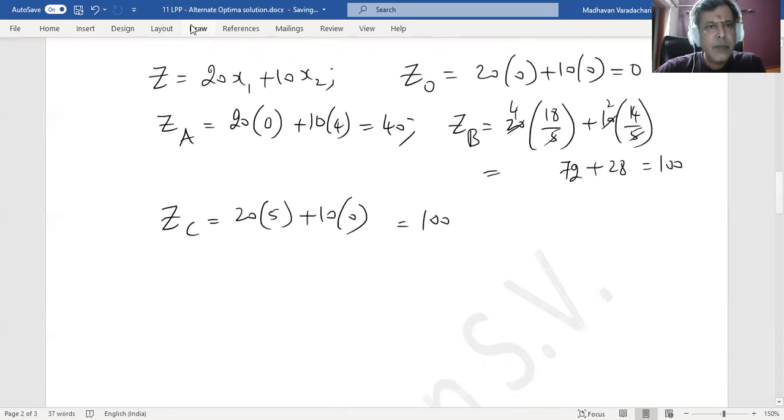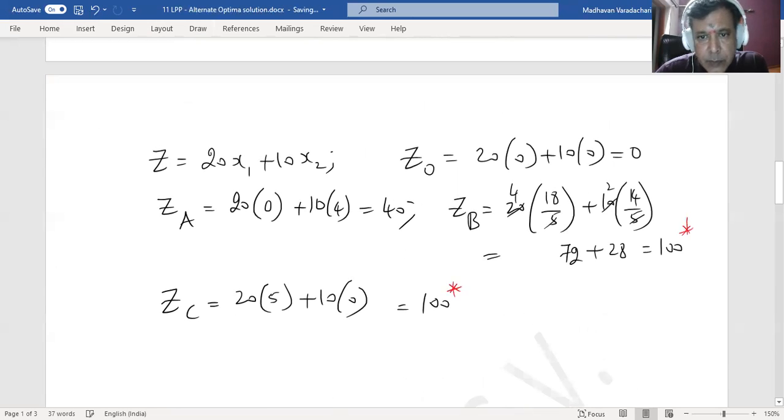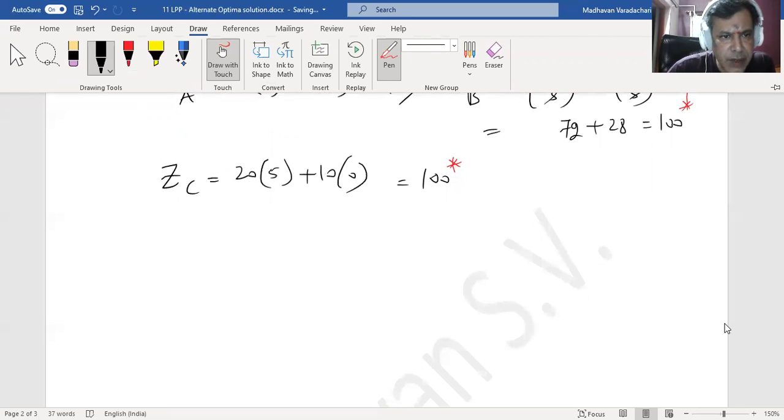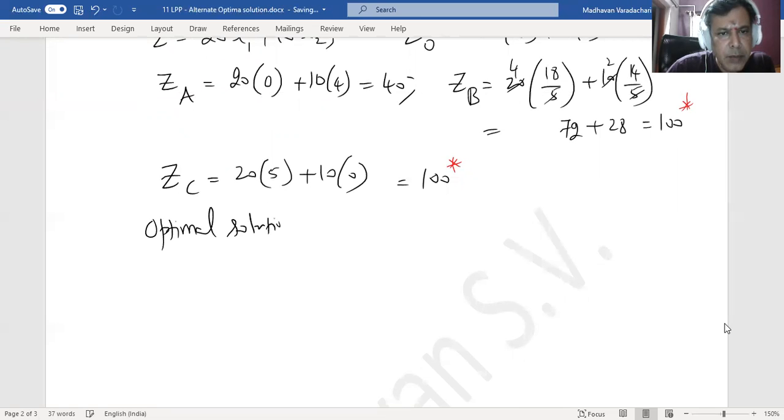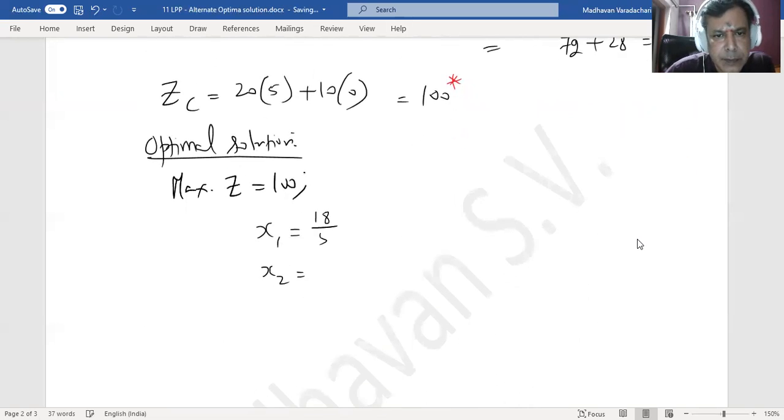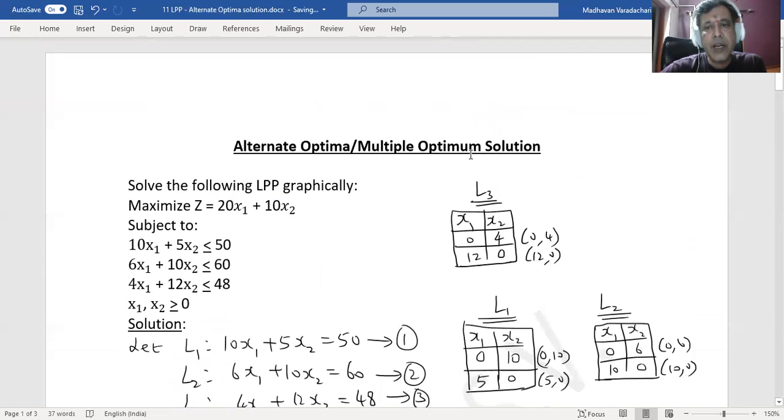We are interested in finding out the max Z, and we may notice max Z is 100 and it occurs in two places. Since it is occurring in two different points, it indicates alternative possible solutions. I will say optimal solution for this problem is max Z is 100, and corresponding x₁, x₂, one possible answer is 18/5 and 14/5. Or alternatively, x₁ is 5, x₂ is 0. So you have got two solutions. Both are giving you the optimal value of 100. That is why this particular special case is called alternative optimal solution or multiple optimal solution.